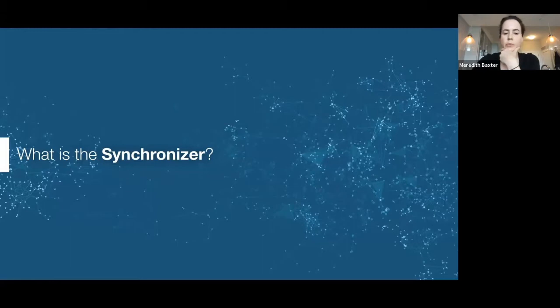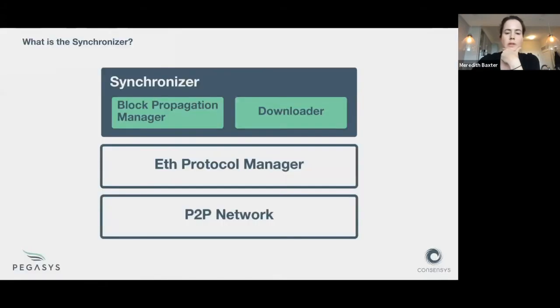To start out I just want to give a little bit of background. Here I've got kind of a simplified architecture diagram of some of the P2P code. At the base you can see there's sort of a layered structure. At the base we have the P2P network, it's responsible for finding peers on the network. That's the discovery part of the protocol.